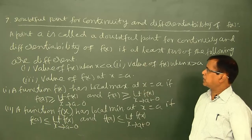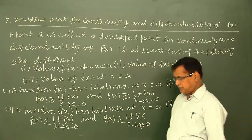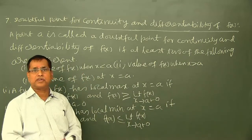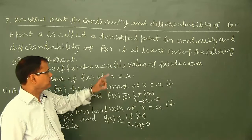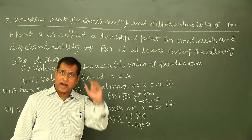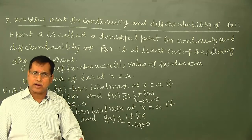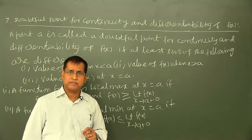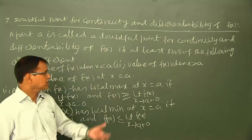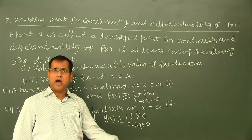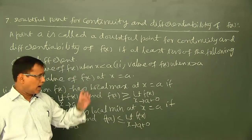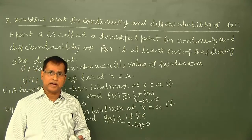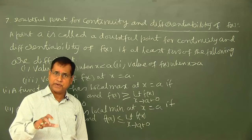We come to the next concept. If A is a doubtful point for continuity and differentiability of a function f(x), and f(x) has local maximum or minimum at this point, then what will be the condition? Under what condition will f(x) have maximum or minimum at x equal to A, where A is a doubtful point for continuity and differentiability of f(x)?